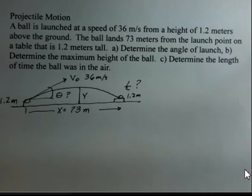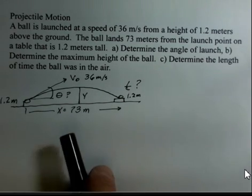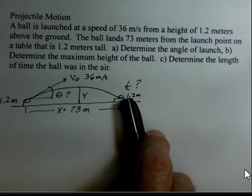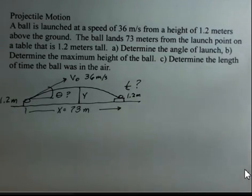The ball has a speed of 36 meters per second at launch, and it's going to land 73 meters downrange, horizontal distance, on a table that's 1.2 meters off of the ground.